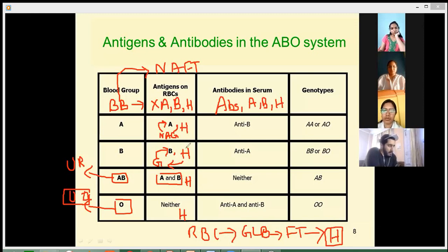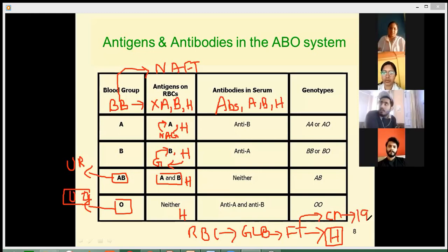All these H antigens are formed due to the activity of an enzyme, the fucosyltransferase enzyme. And the fucosyltransferase enzyme gene is present on chromosome number 19.